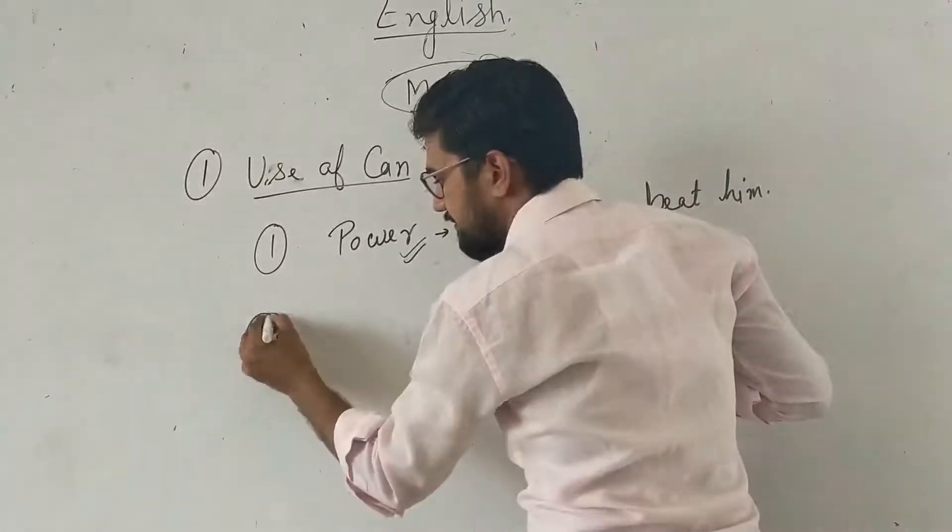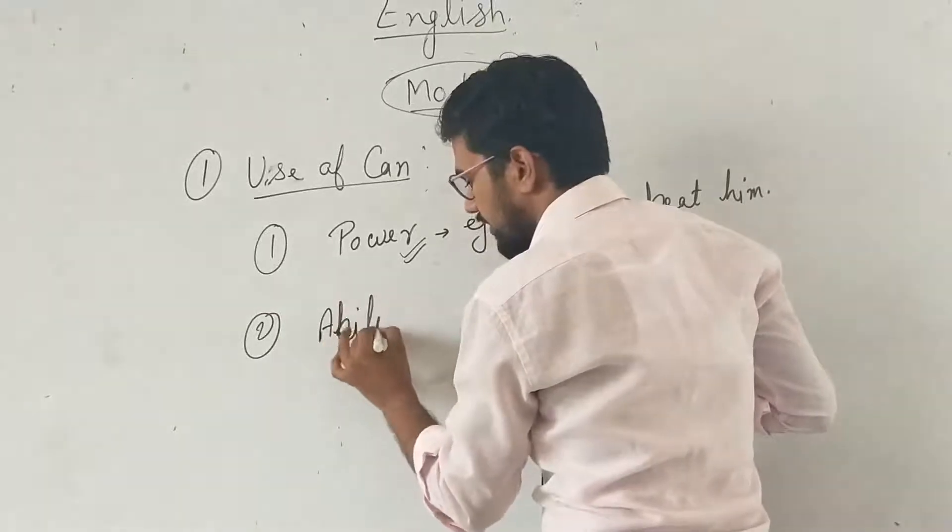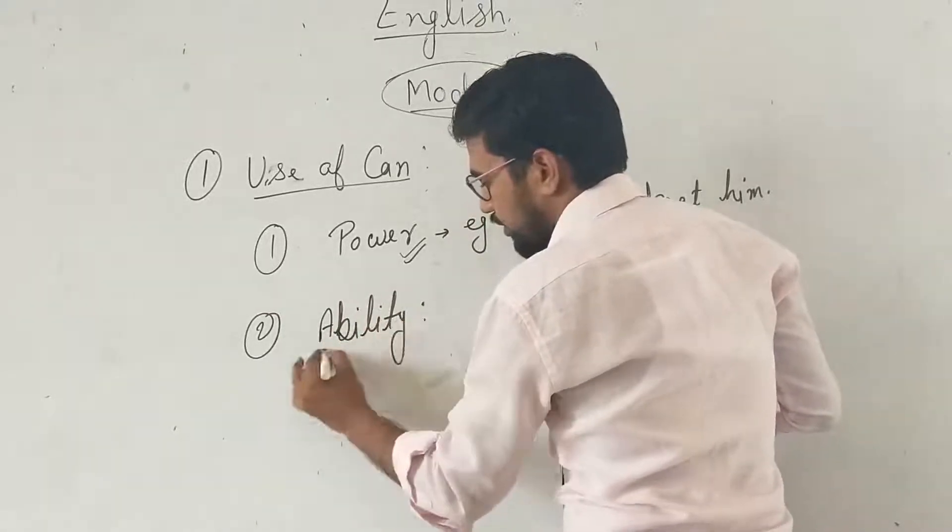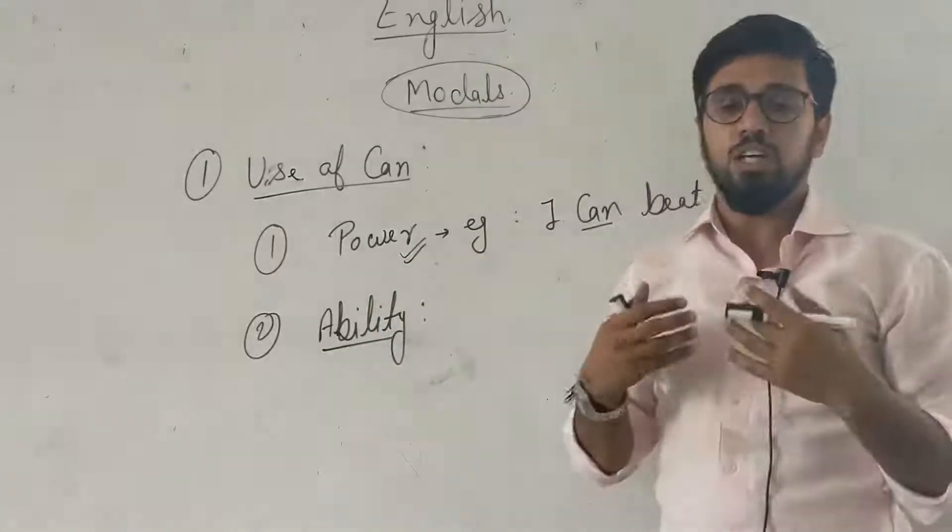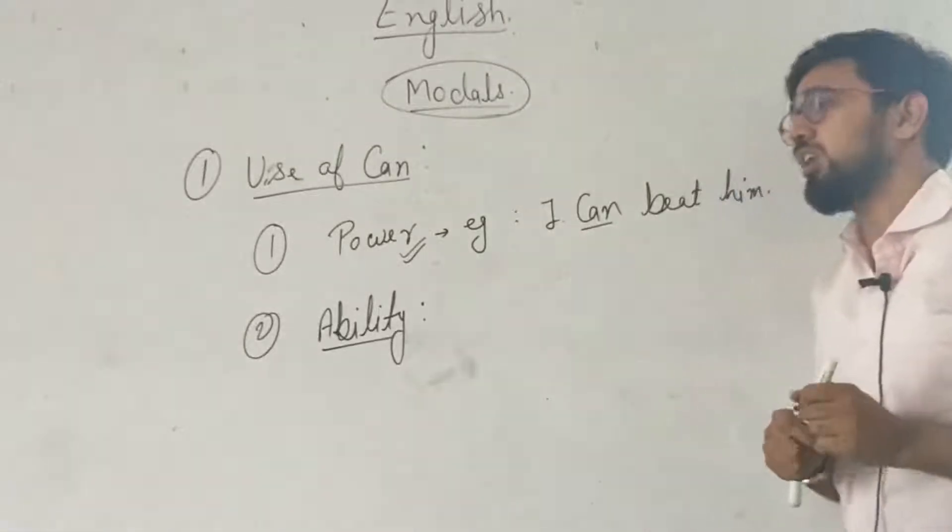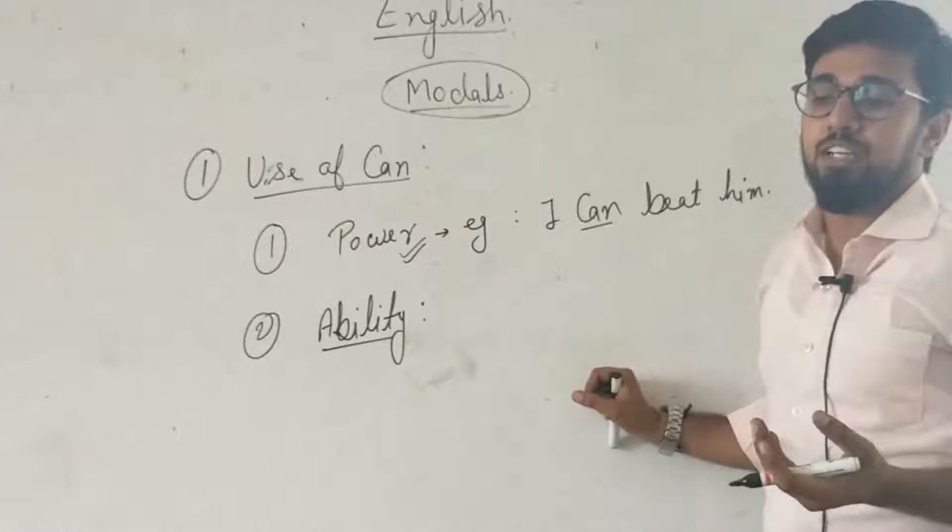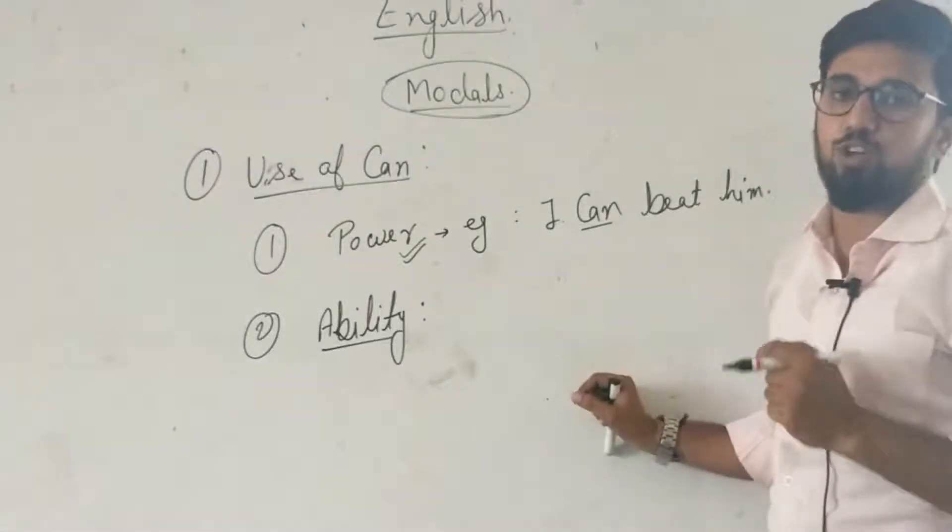Second thing, to show the ability. For an example, if I talk about ability, I can complete my work. That is my ability. For an example, if I talk about a student, I can complete my homework within two hours.